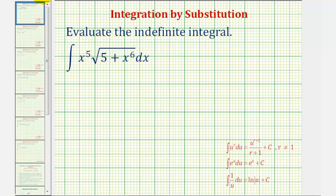Which means we're going to let u be equal to the inner function of the composite function. So if we let u equal five plus x to the sixth, notice how using this equation here, this becomes the square root of u.